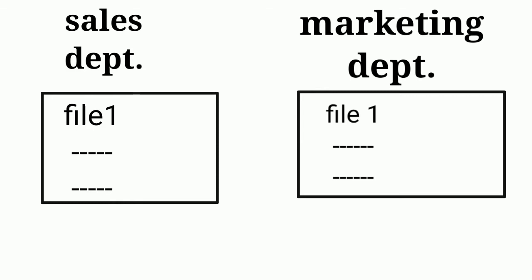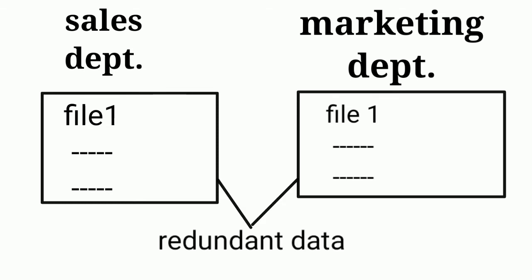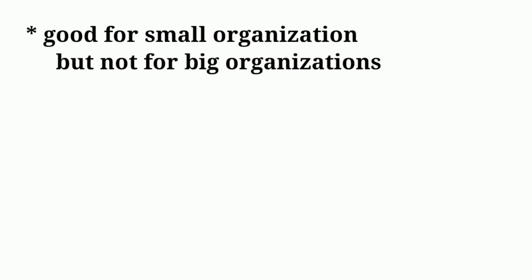Redundancy is a very big drawback of the traditional file processing system. There should be no redundancy or duplicate data in a database. This system is only suitable for small organizations where the amount of data is small. It is not appropriate for large organizations — relational databases are more appropriate for them.